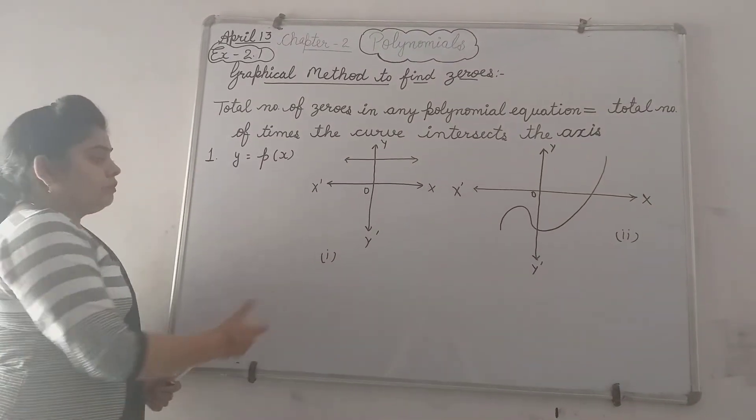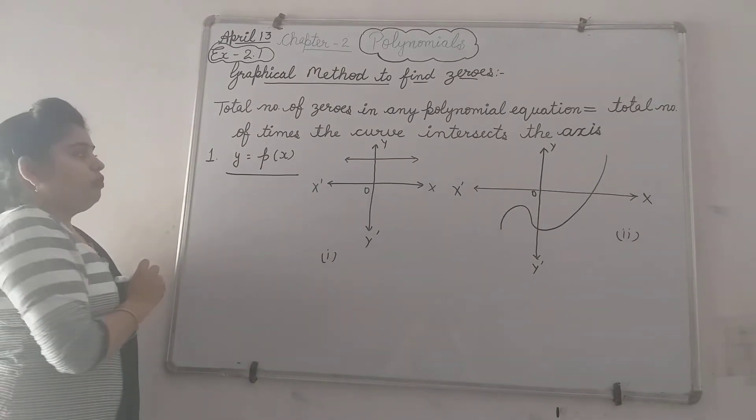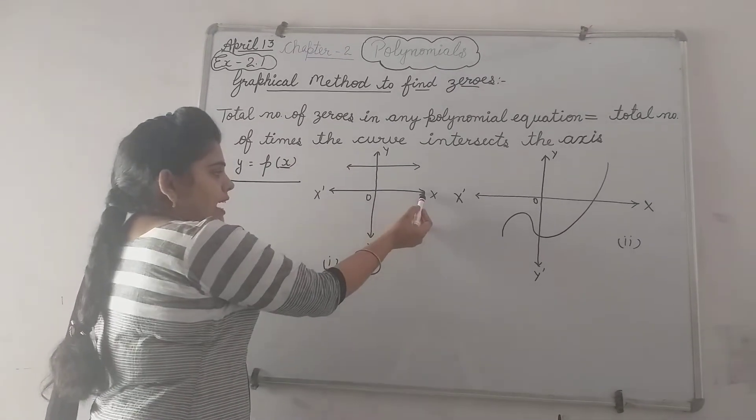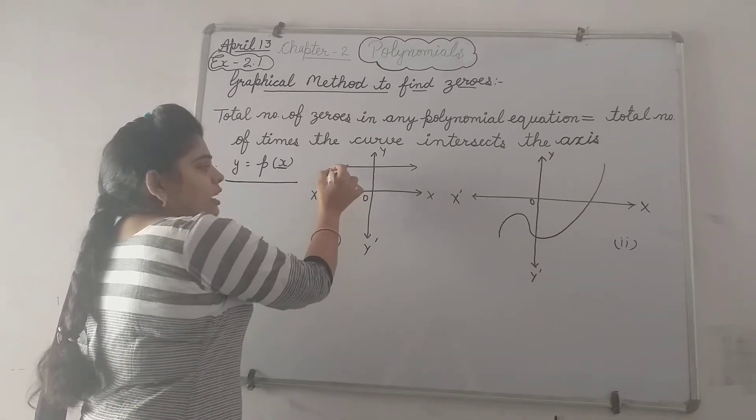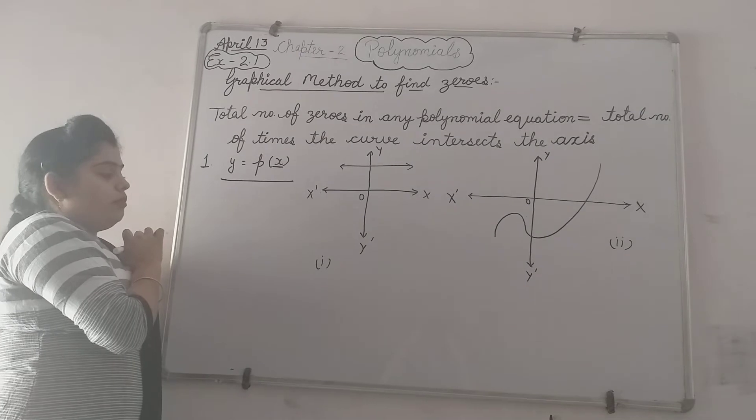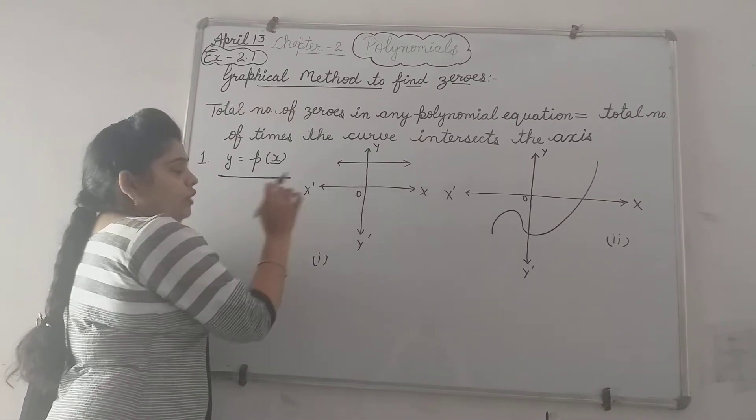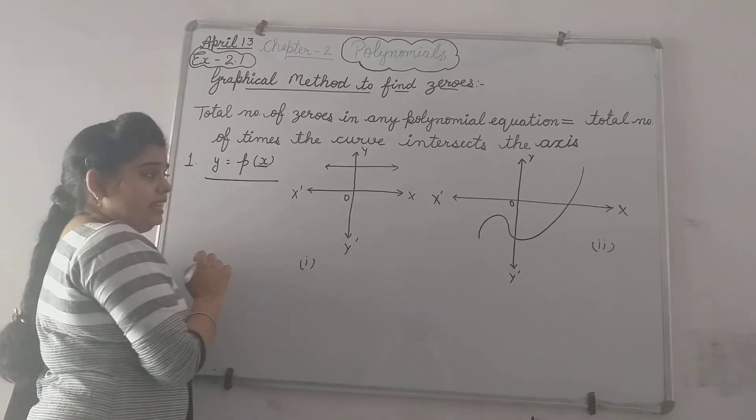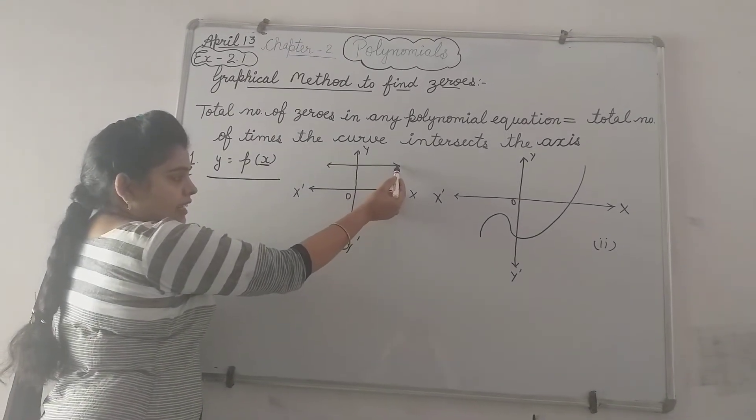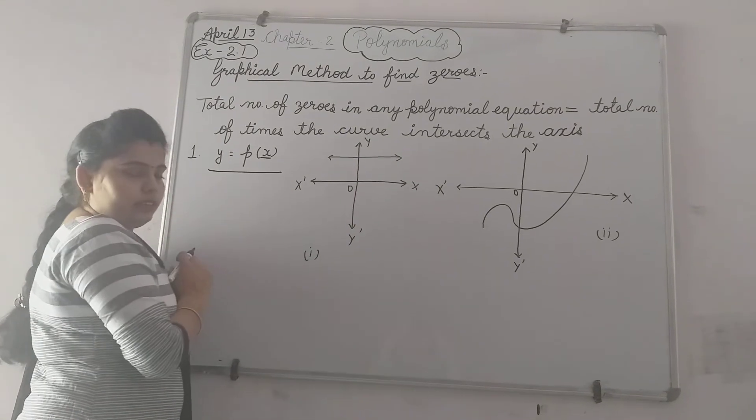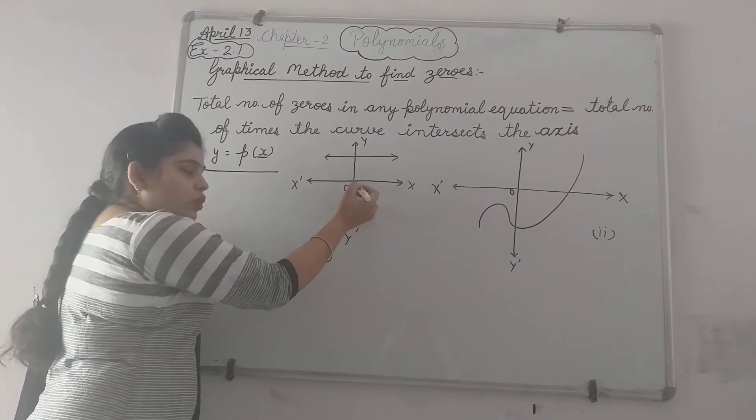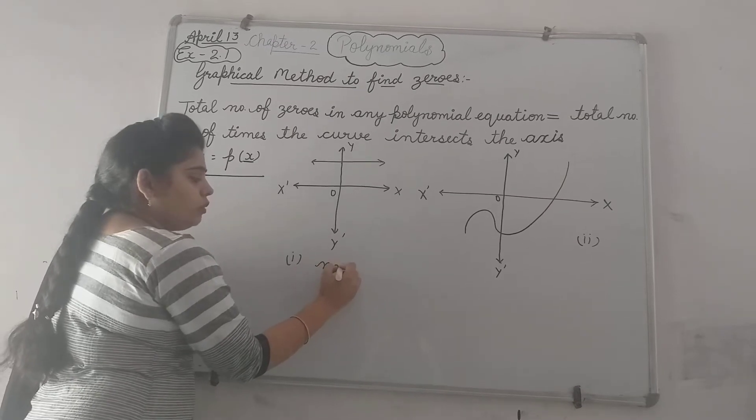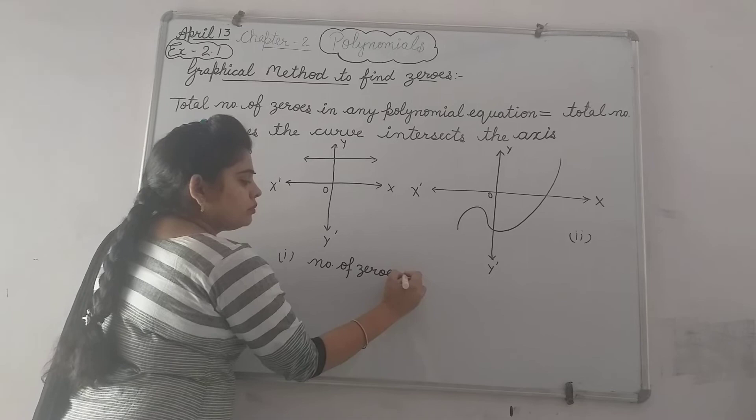Let's take an example. First part: what is given? y equals p of x. We are dealing with x axis and y axis. A line parallel to x axis is given and we have to find number of zeros. Let's check how many times this line is intersecting x axis. If this line is parallel to x axis, it is not touching it. So here our number of zeros will be 0.